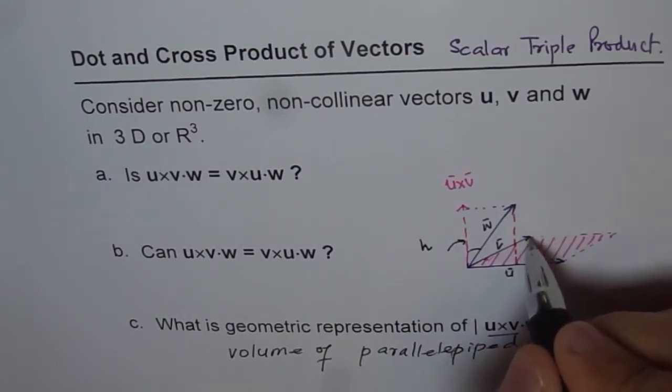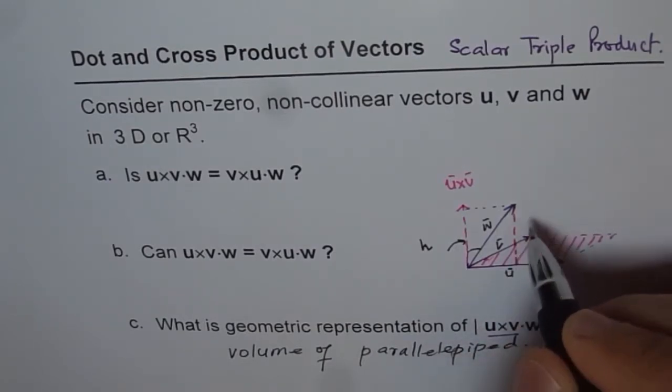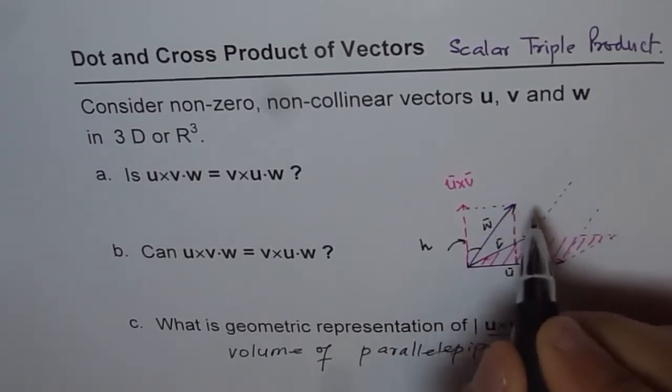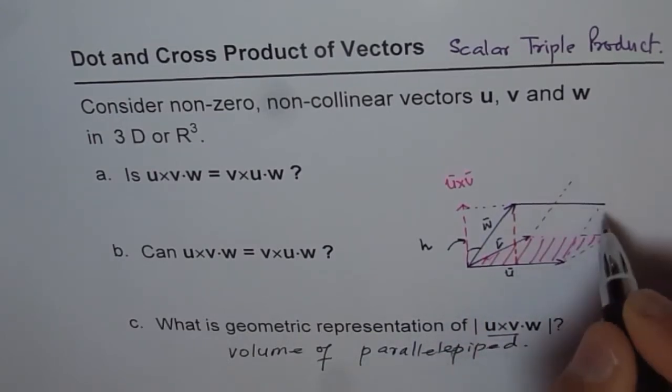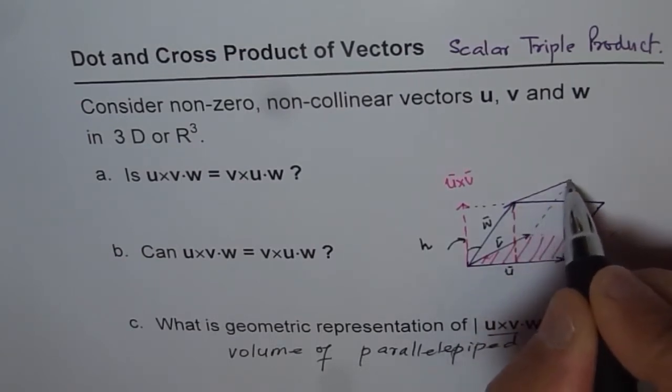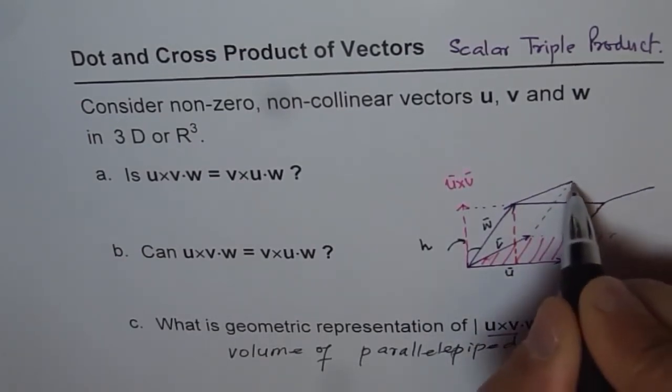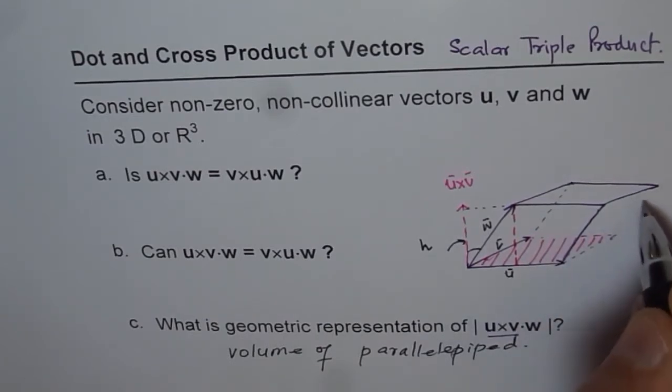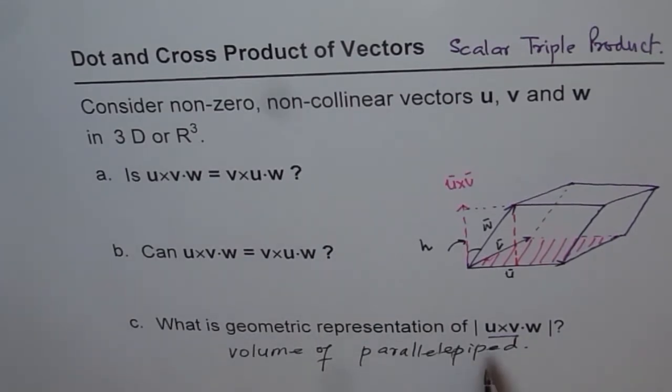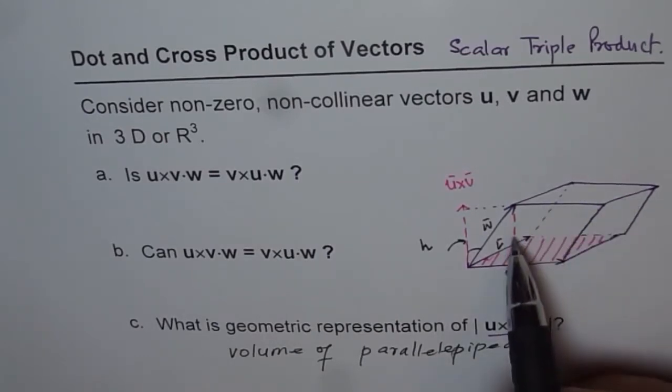So, volume of parallelopiped is given by this expression, just the magnitude. So now we will just complete this to show you how it works. We will just complete so we can have a parallelopiped here. So we will draw vectors parallel to this to complete our parallelopiped. Trying to do a neat job here. So it is kind of not an easy diagram to make.